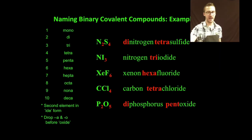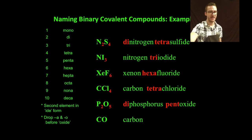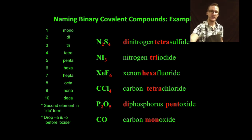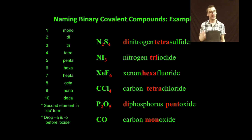CCl4: carbon, again no prefix — 'tetrachloride.' P2O5: 'diphosphorus pentoxide.' Notice there I've dropped the 'a' in 'penta' — instead of saying 'pentaoxide' we just say 'pentoxide.' CO: carbon, no prefix on that first element — 'monoxide.' Notice on the second element we do have the prefix representing one, and we drop the 'o' in 'mono' to avoid saying 'monooxide.' Take a moment, pause the video, check out the formulas and names — the first element always gets a prefix unless it's one, and the second element always gets a prefix no matter what.